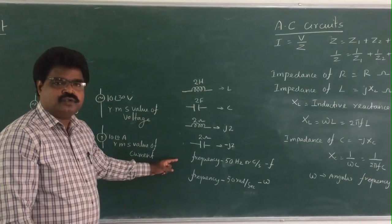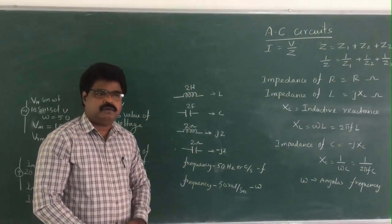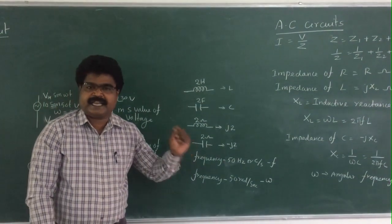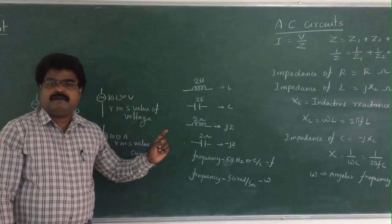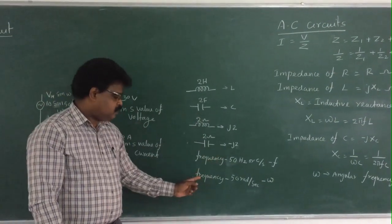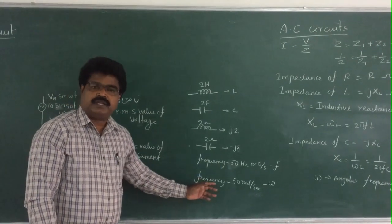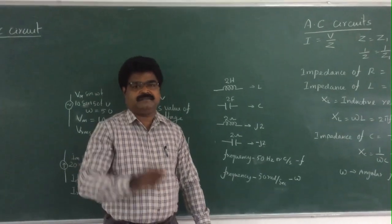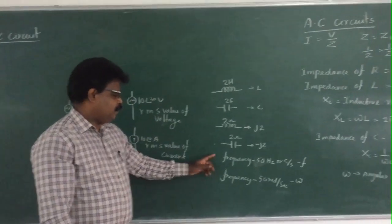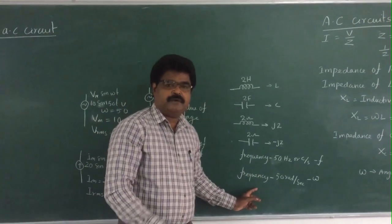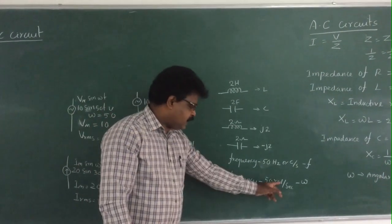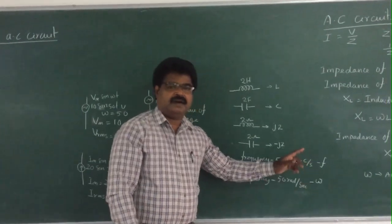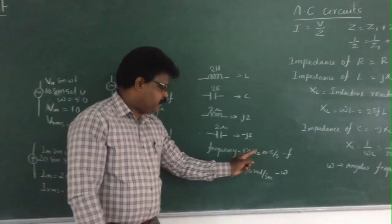Similarly, be careful with frequency units. Sometimes a problem gives frequency in hertz (Hz) — that is the value of F. But if frequency is given as radians per second, that is the value of ω (omega), not F. You must be very careful not to confuse them.